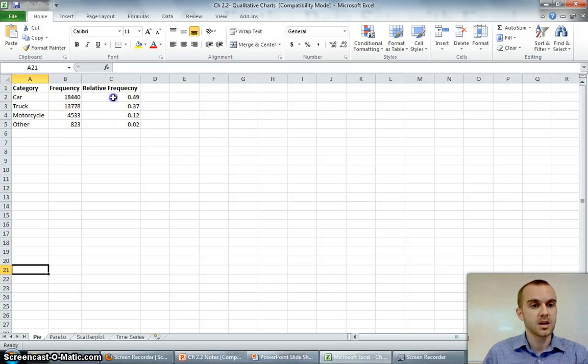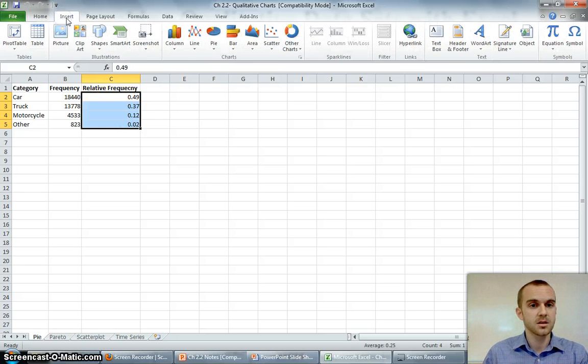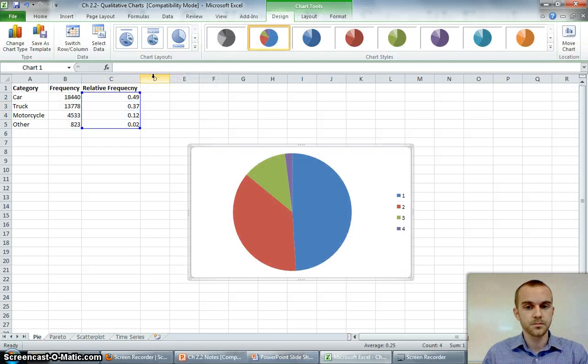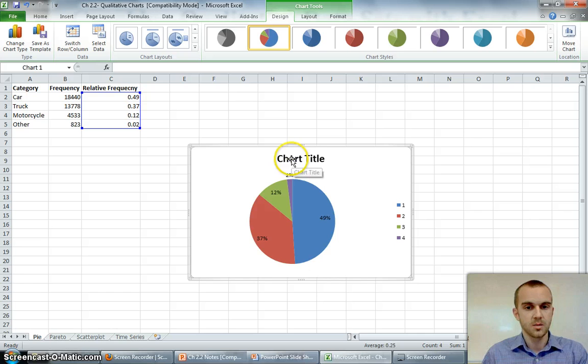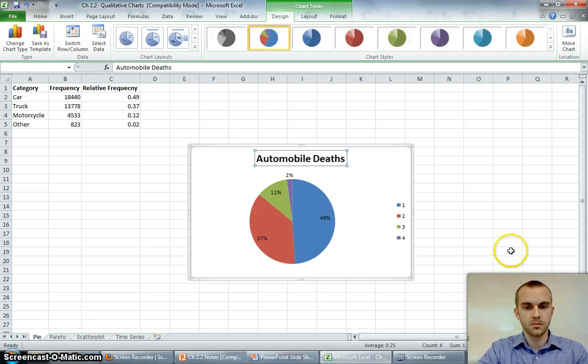If I want to make my pie chart, I'm going to highlight just my relative frequencies. I go Insert, Pie, and I'm just going to click on the very first one. Now, I need some more information than this, so I can choose this quick layout. And I'm going to find one that has the title at the top as well, so that would be Layout 6. My chart title would be Car Crash Death, or Automobile Death.